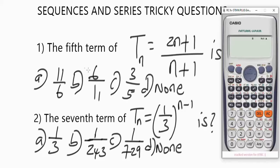So let's start and look at how to solve this problem fast with a Casio calculator. The first one says the fifth term of Tn equals (2n + 1) / (n + 1). So to solve this kind of problem you go to Mode on your Casio fx-991ES Plus calculator.